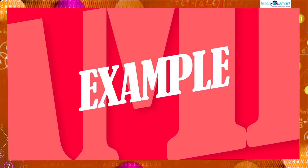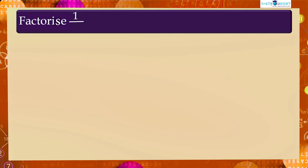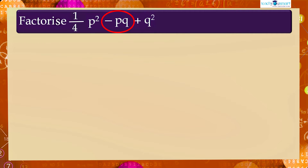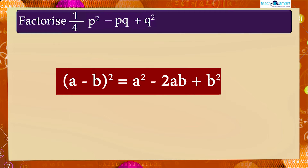Let's do another example. Factorize (1/4)p squared minus pq plus q squared. The given expression has only three terms and the middle term has a negative sign, so we will try to apply the identity (a minus b) whole square equals a squared minus 2ab plus b squared.